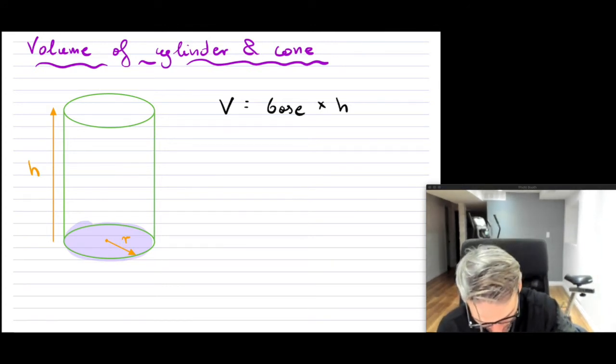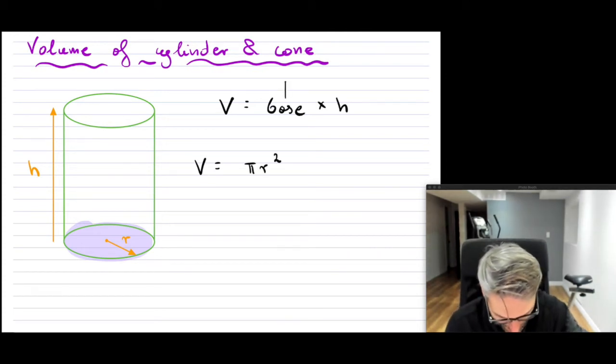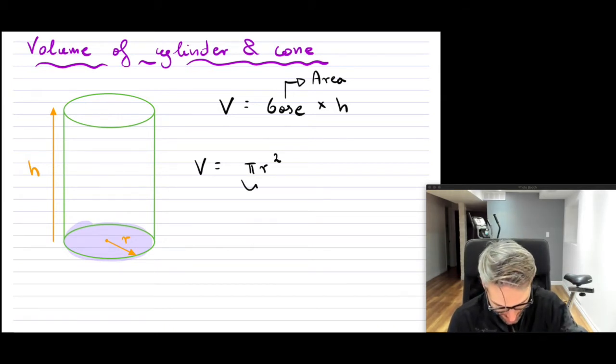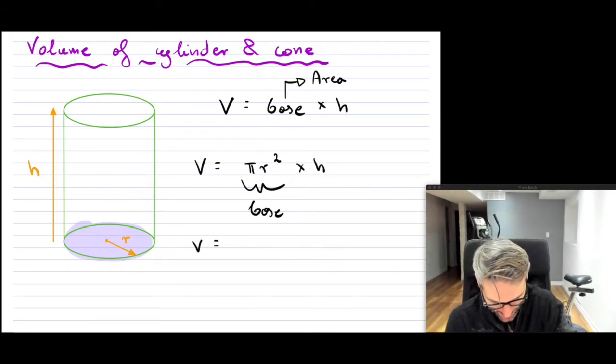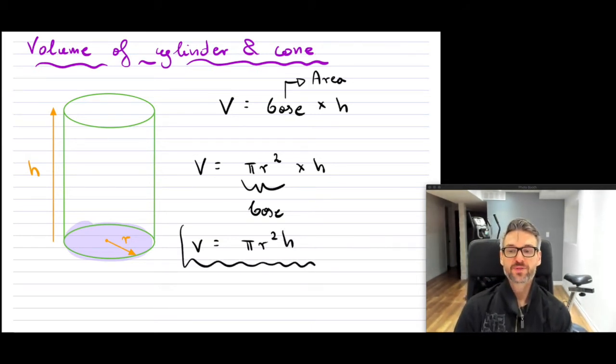Well, we know that the base is pi r squared. So that is the area. So that is the base if it was some kind of a prism. In this case, it's a cylinder. So we know our base, that's right here. Now we know our height.